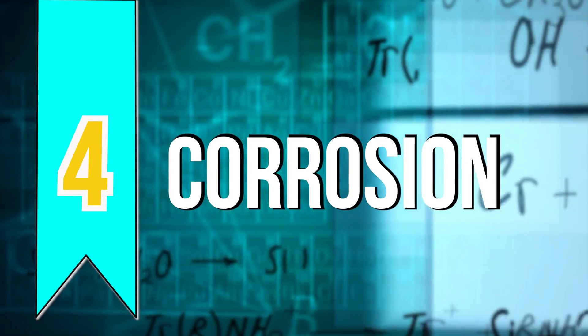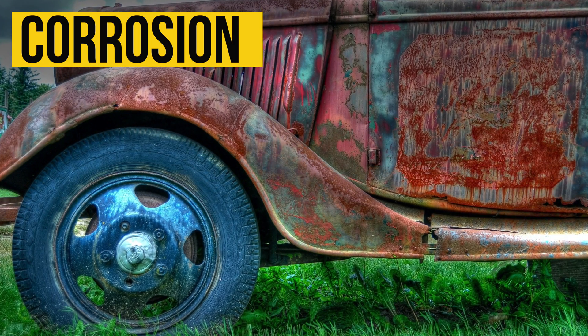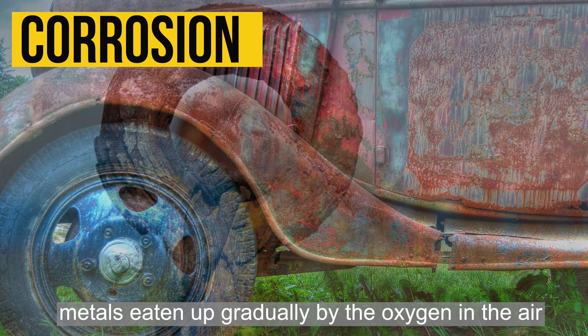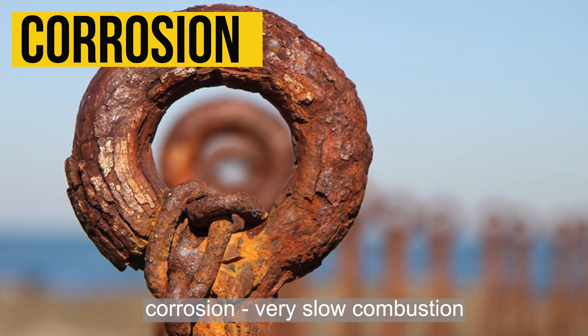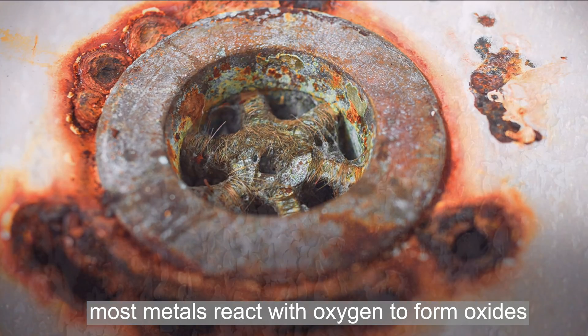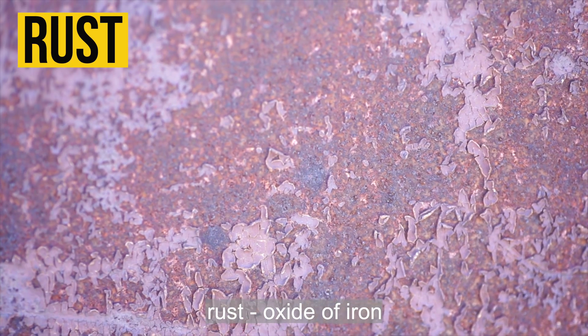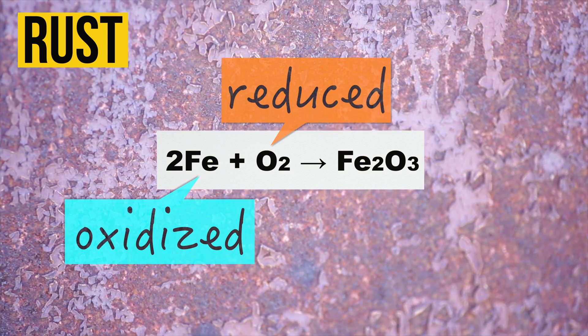Number four, corrosion. Another classical example of oxidation is corrosion. Corrosion is a process where metals are eaten up gradually by the oxygen in the air. In a way, corrosion is a very slow combustion. Most metals react with oxygen to form oxides. The oxide of iron is commonly known as rust. In this reaction, oxygen gets reduced while iron gets oxidized.